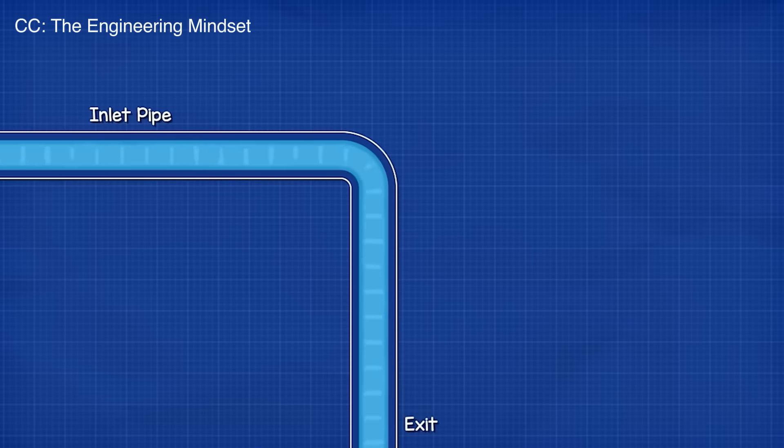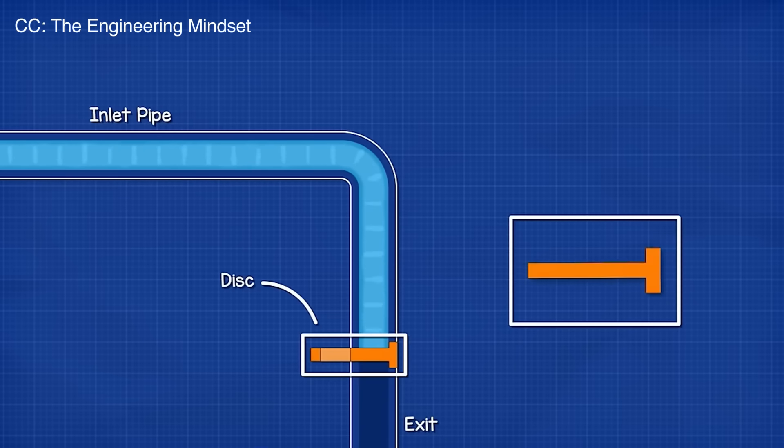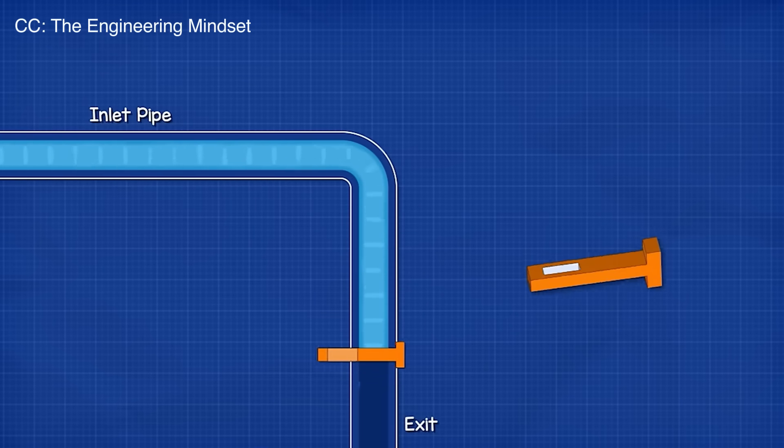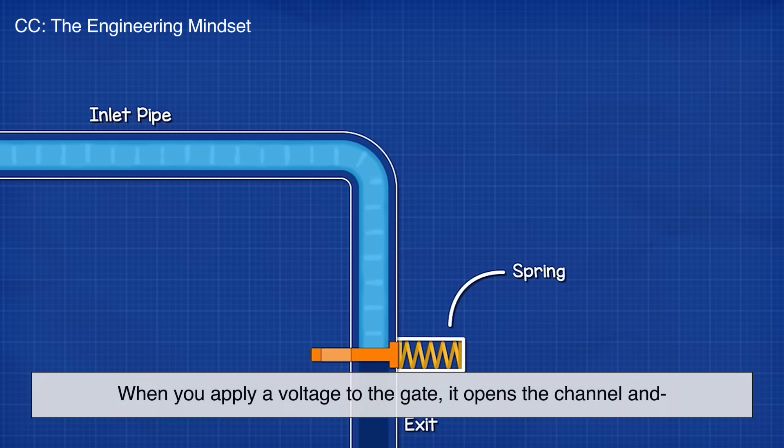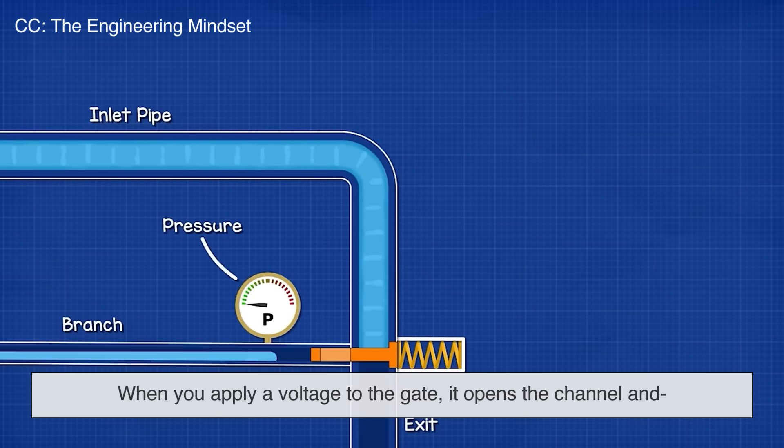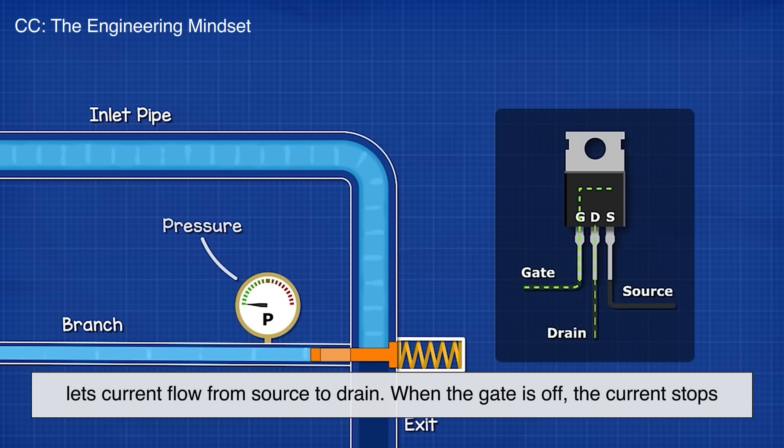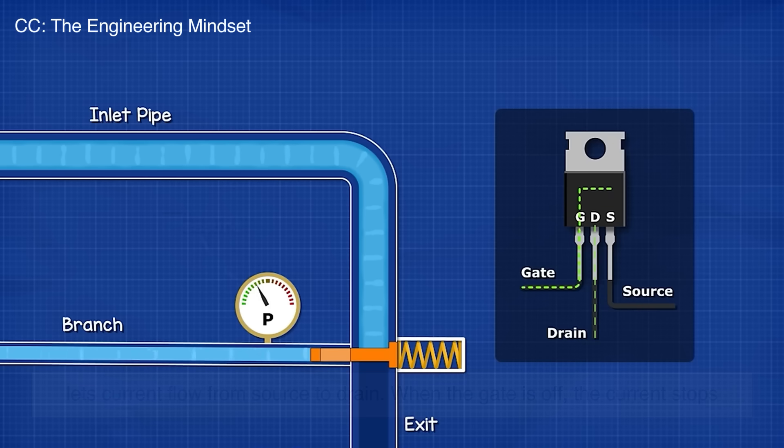Imagine a water pipe where the source is where the water comes in, the drain is where it goes out, and the gate is like a valve. When you apply a voltage to the gate, it opens the channel and lets current flow from source to drain. When the gate is off, the current stops. Simple, right?